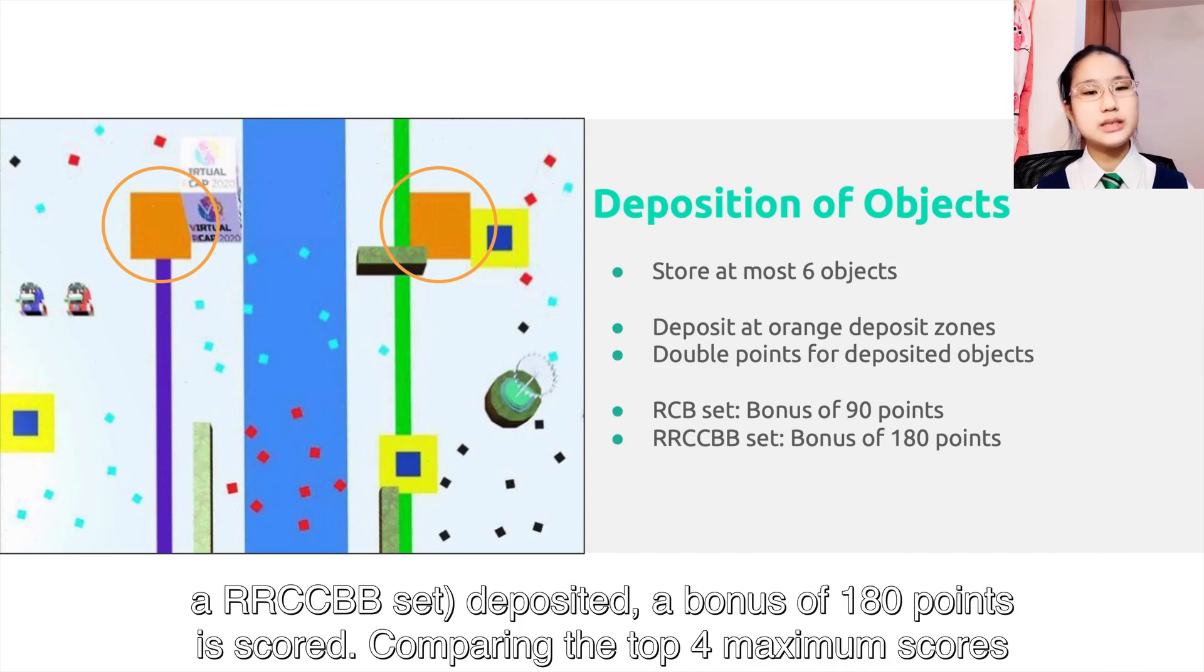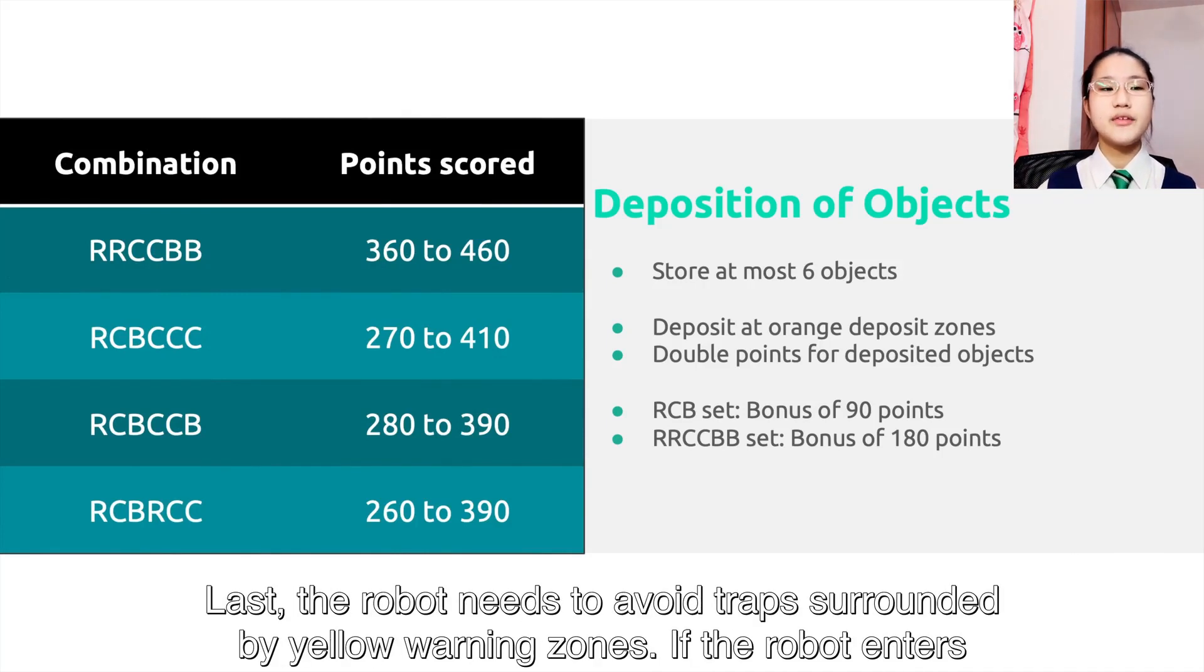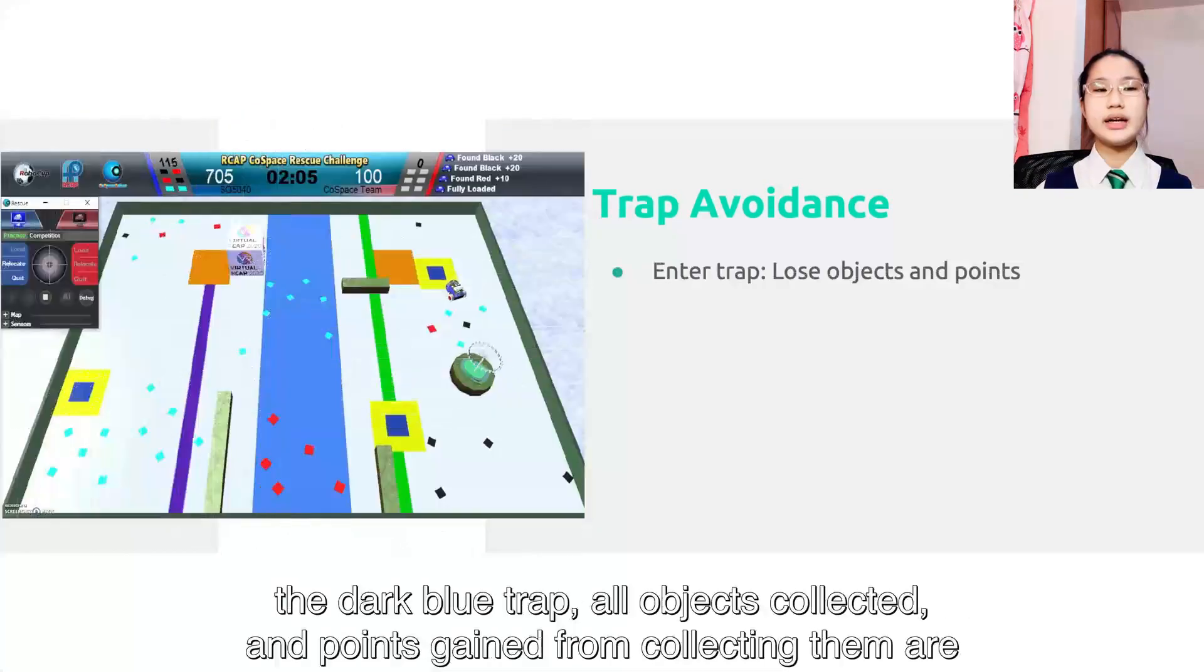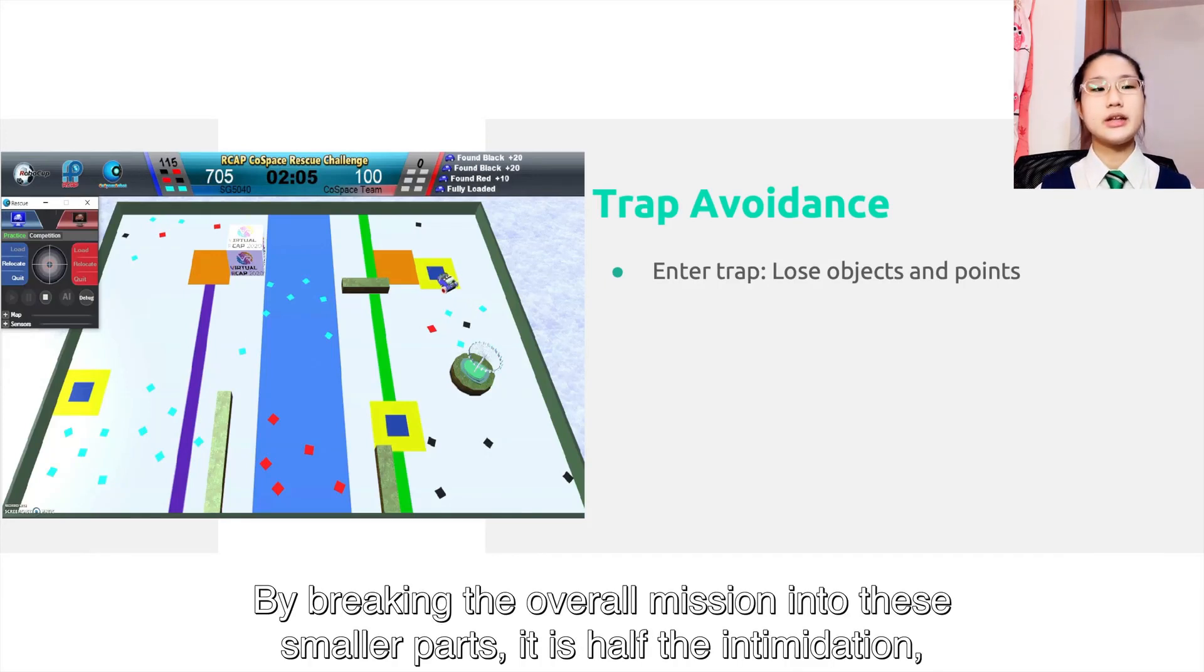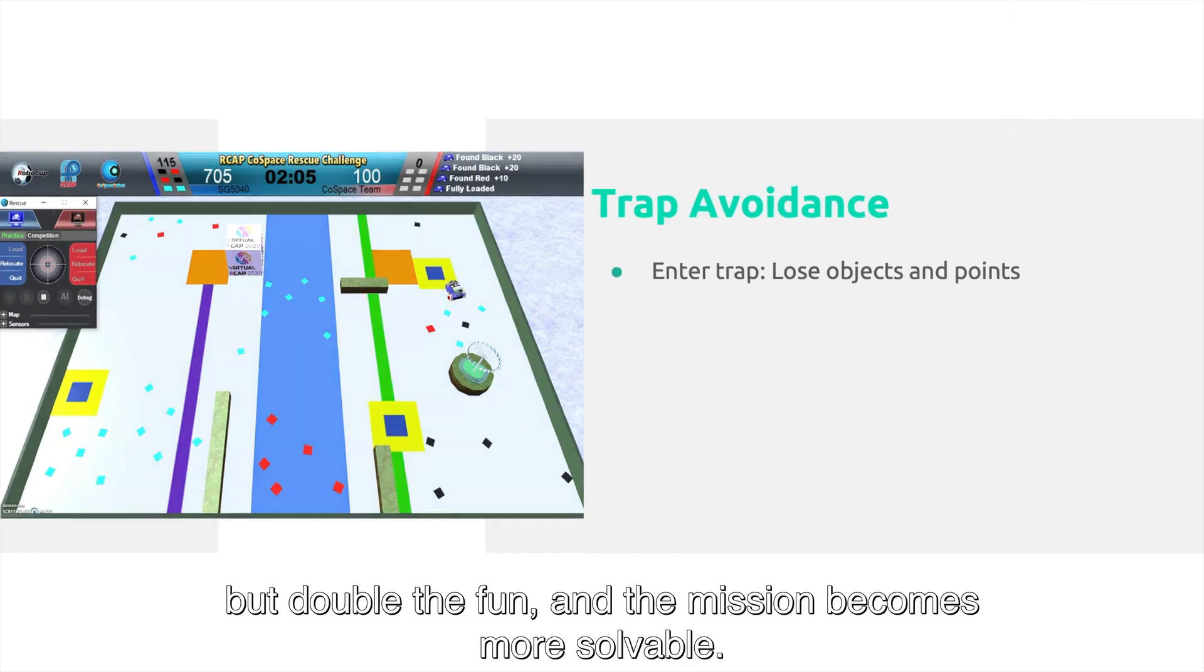Comparing the four maximum scores of different sets deposited, collecting RRCCBB sets gives a consistently high score. Plus, the robot needs to avoid traps surrounded by yellow warning zones. If the robot enters the dark blue trap, all objects collected and the points gained from collecting them are lost. By breaking the overall mission into these smaller parts, it is easier than intimidating to find, and the mission becomes more solvable.